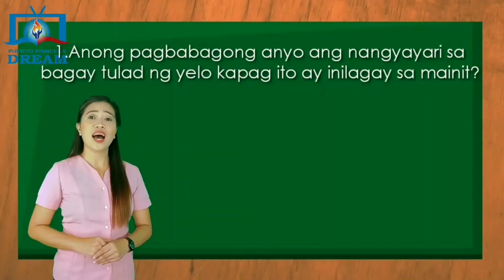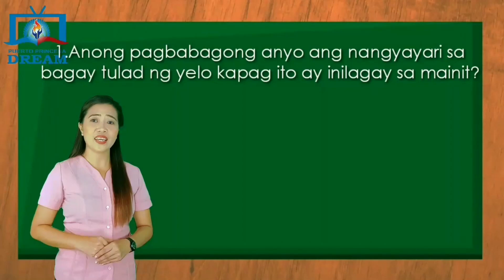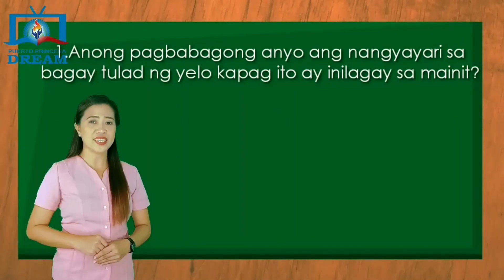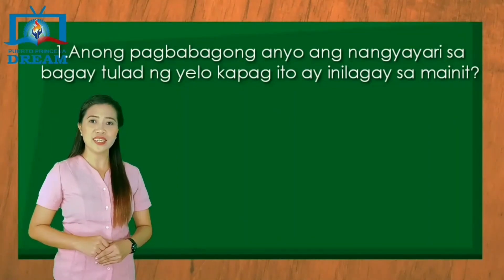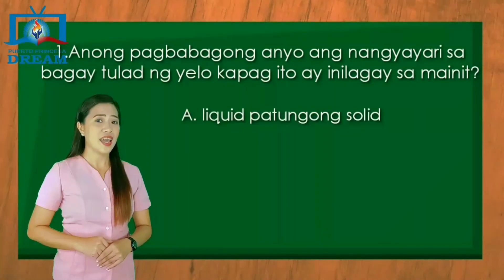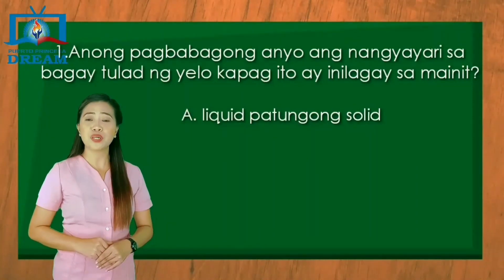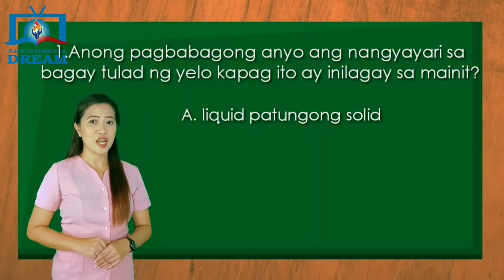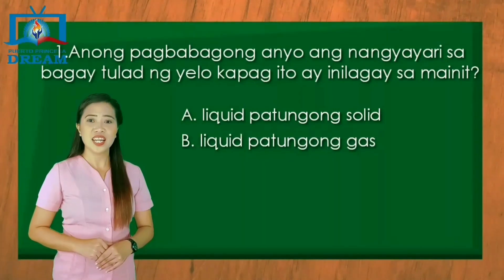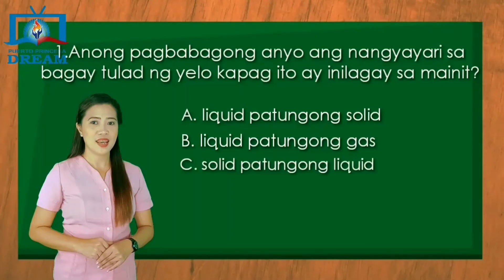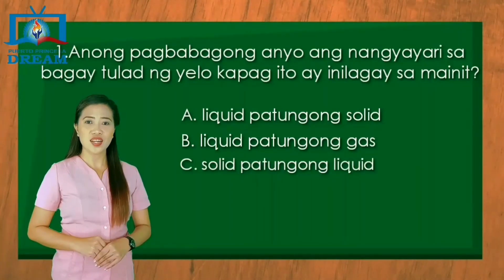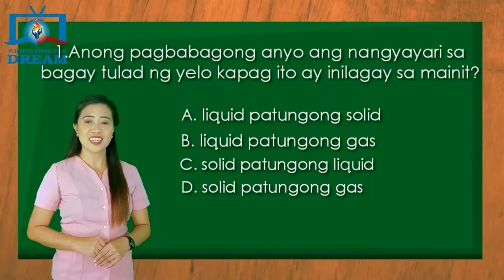Una, anong pagbabagong anyo ang nangyayari sa bagay tulad ng yelo kapag ito ay inilagay sa mainit? A. Liquid patungong solid. B. Liquid patungong gas. C. Solid patungong liquid. D. Solid patungong gas.